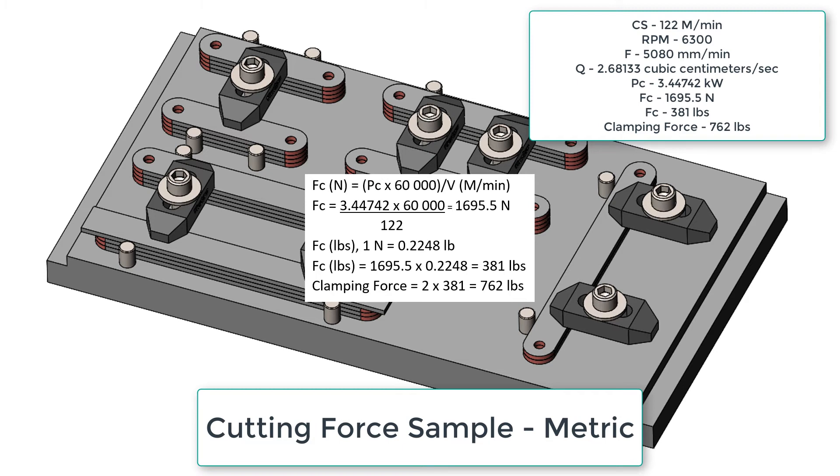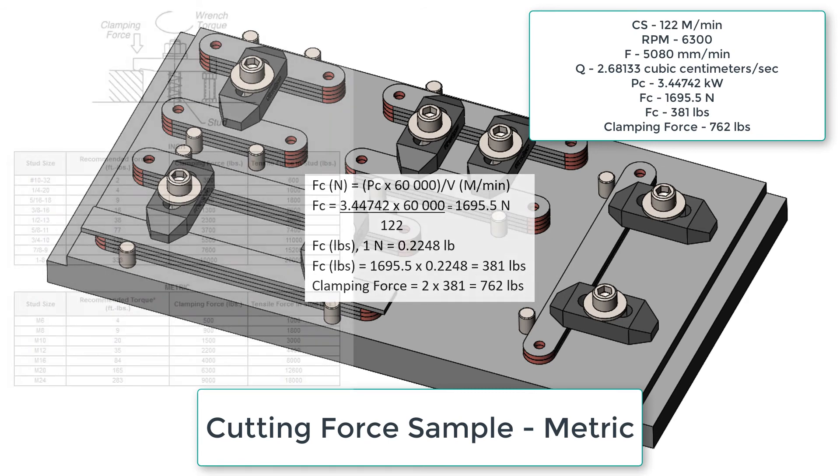For those of us living in North America our next step is often to convert the force to pounds. To do this we're going to multiply by 0.2248 and find that we need 381 pounds of cutting force resisted. Therefore our clamping force would be 762 pounds.